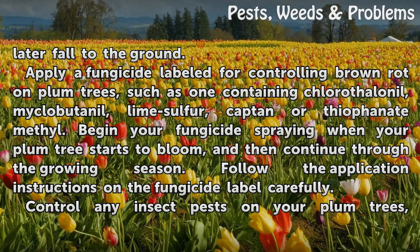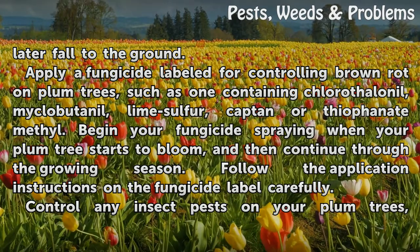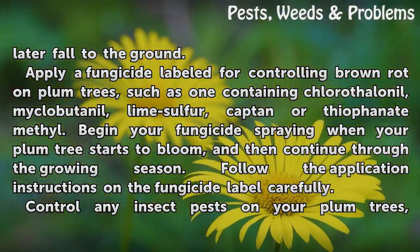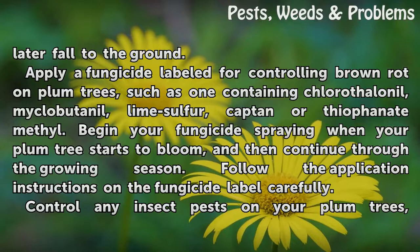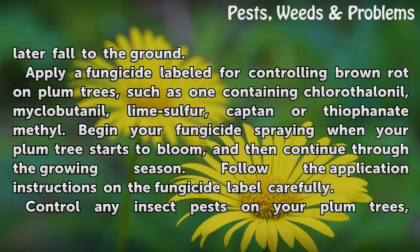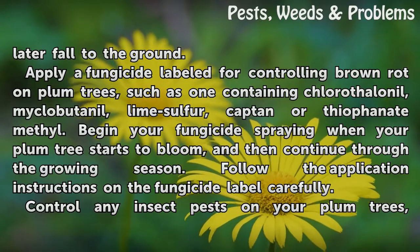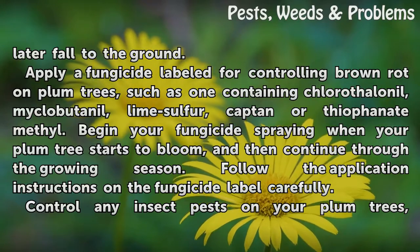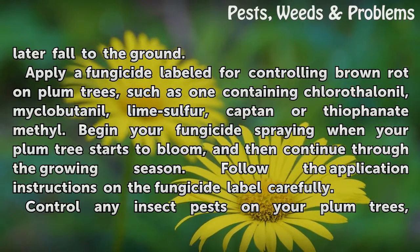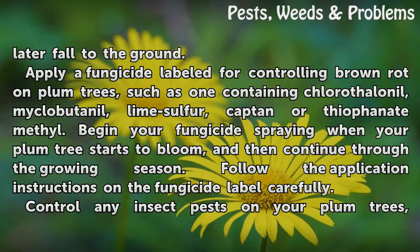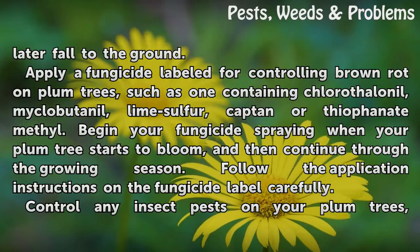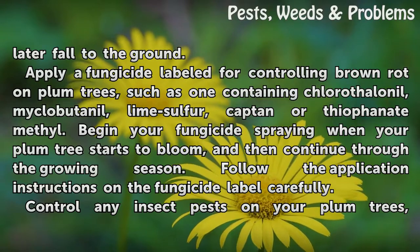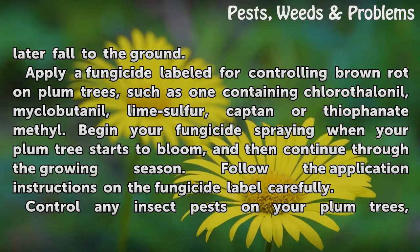Apply a fungicide labeled for controlling brown rot on plum trees, such as one containing chlorothalonil, myclobutanil, lime sulfur, captan or thiophanate-methyl. Begin your fungicide spraying when your plum tree starts to bloom, and then continue through the growing season. Follow the application instructions on the fungicide label carefully.